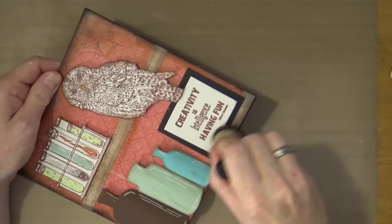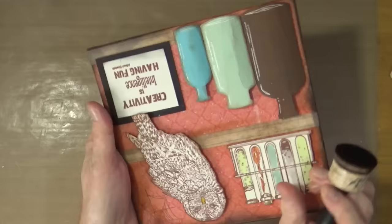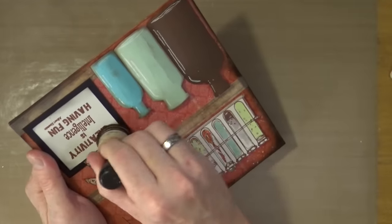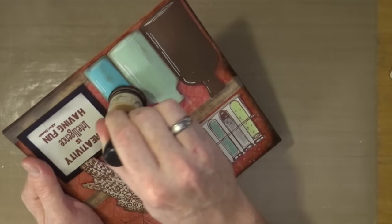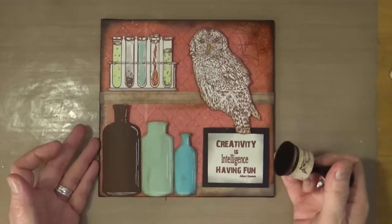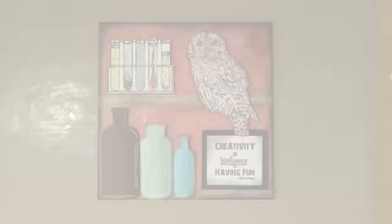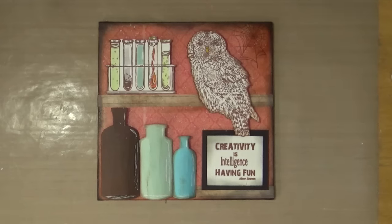I'm grabbing the ink blending tool and just going around some of the areas just to add that final touch of dirt and grunge to the corners of my word block and just to catch some of the other little elements as well, just to make sure that it does look a bit dirty and dusty. And then I think we can call this project complete.